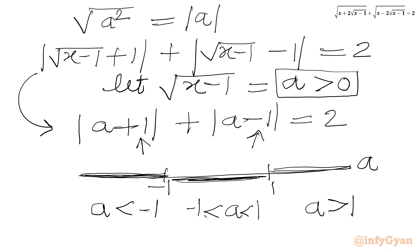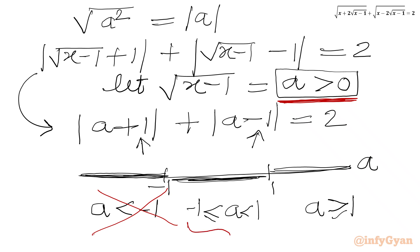Case 1 will be rejected because our condition on a is that a must be positive. So we cancel the case where a is negative only, and we will begin with Case 2 and Case 3.